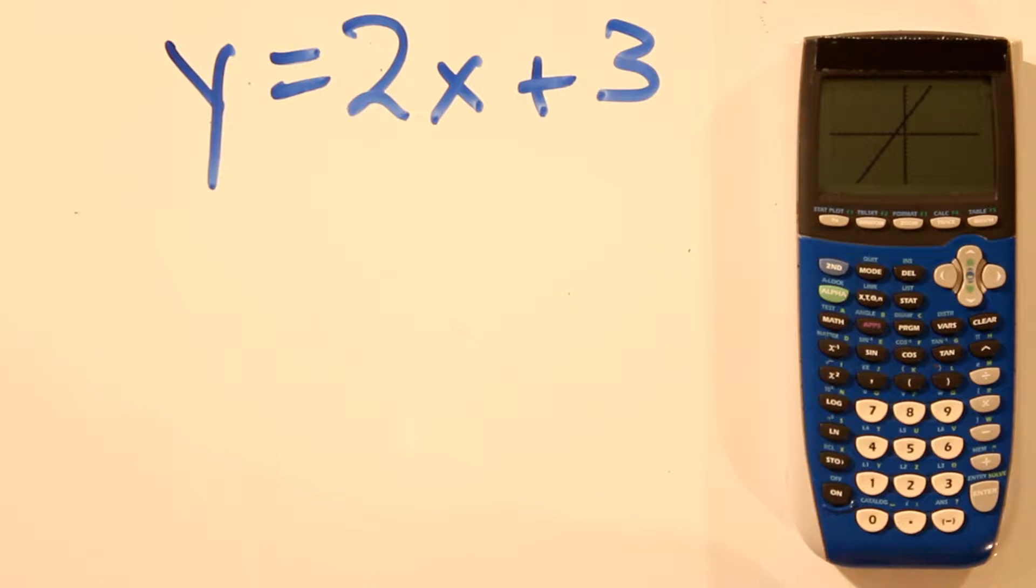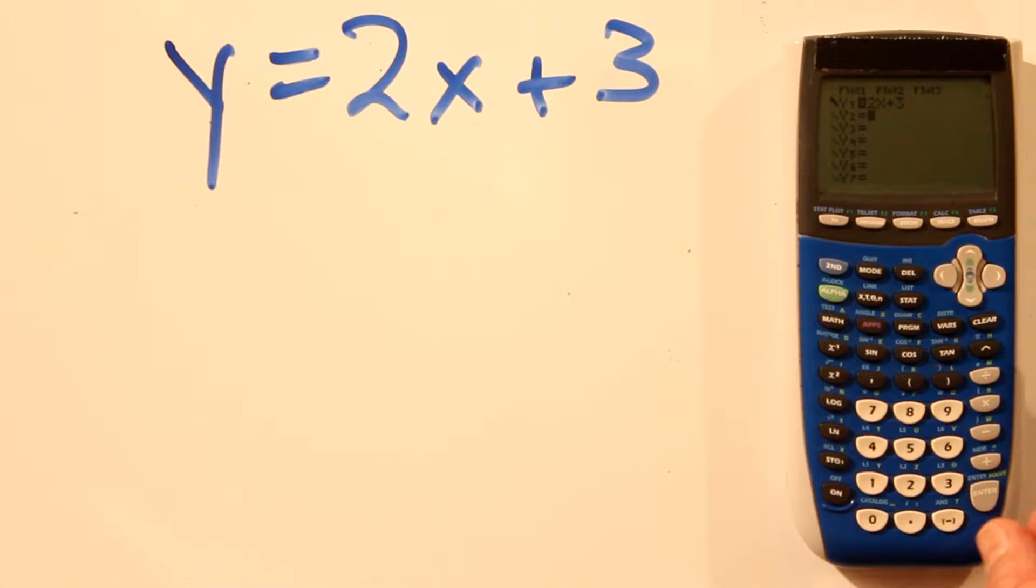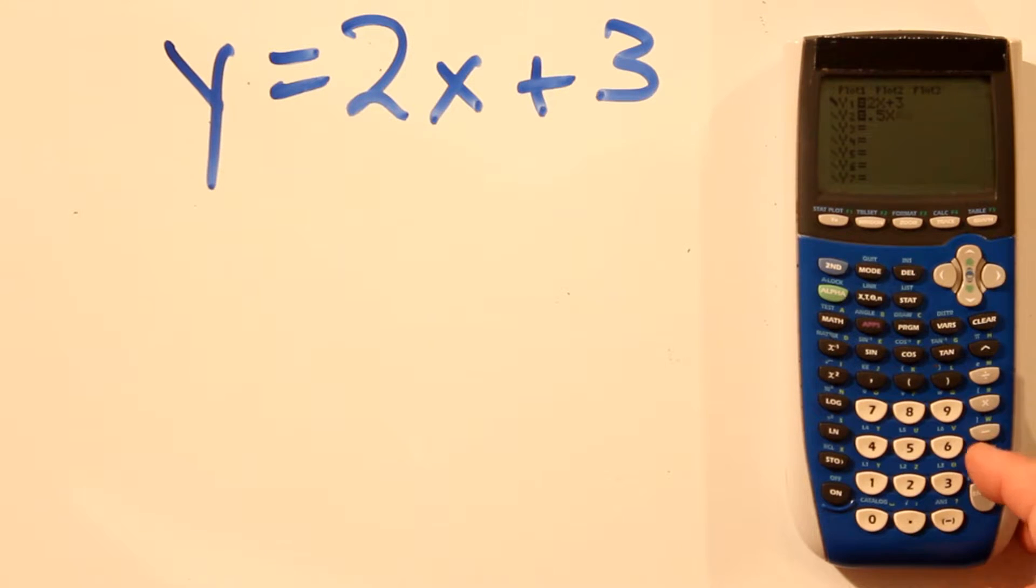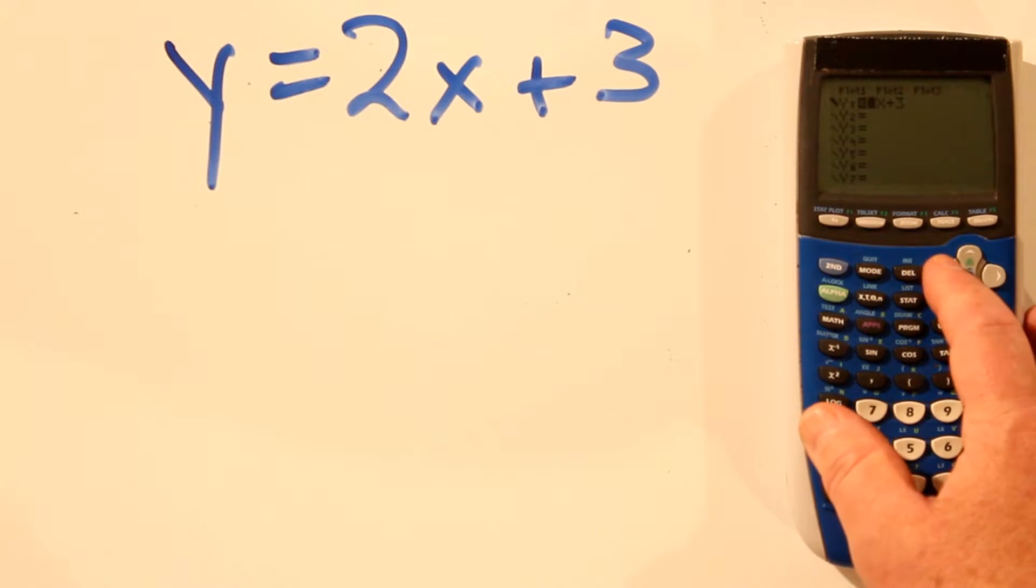So if I hit graph, it's the same graph with a thicker line. That's useful if you have two lines and you want to distinguish between the two of them. Let's graph y equals 0.5x plus 4. You can see one has a thick line, one has a thin line.